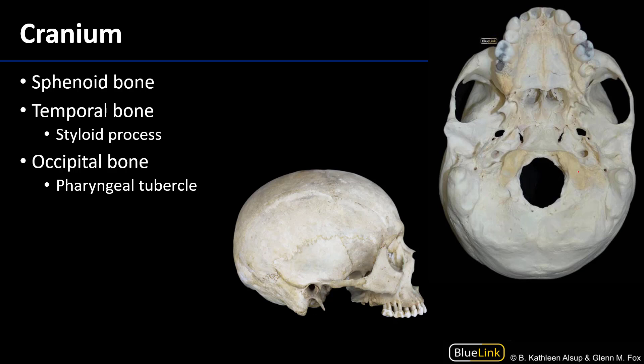One of the important bones of the cranium, which we can see a little of here in profile and a little more here looking at the base of the cranium, is the sphenoid bone. The sphenoid bone is one of my favorite bones. It's remarkably complex, rich with various foramina through which neurovasculature is transmitted. It has its own paranasal sinus. It can be seen from nearly any angle of the skull with the exception of the superior or the posterior. It's just a very complex bone that does a lot of important things.